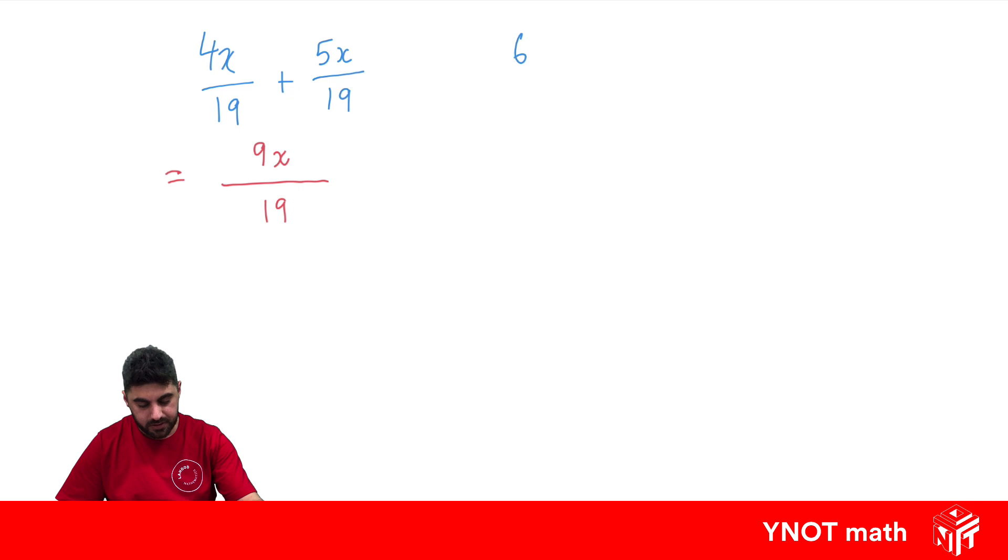What about 6x over 5 minus 2x over 10? Here we've got fractions with different denominators, which means we can't subtract them straight away. We need to make the denominators the same. The lowest common multiple for these denominators is 10.